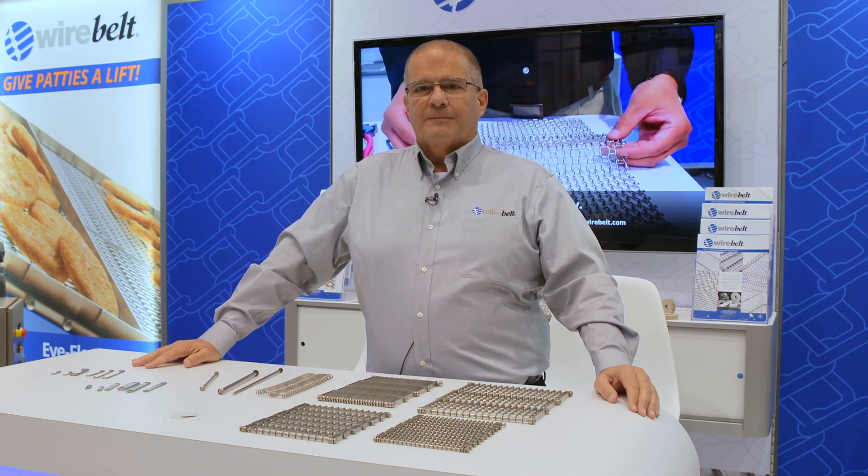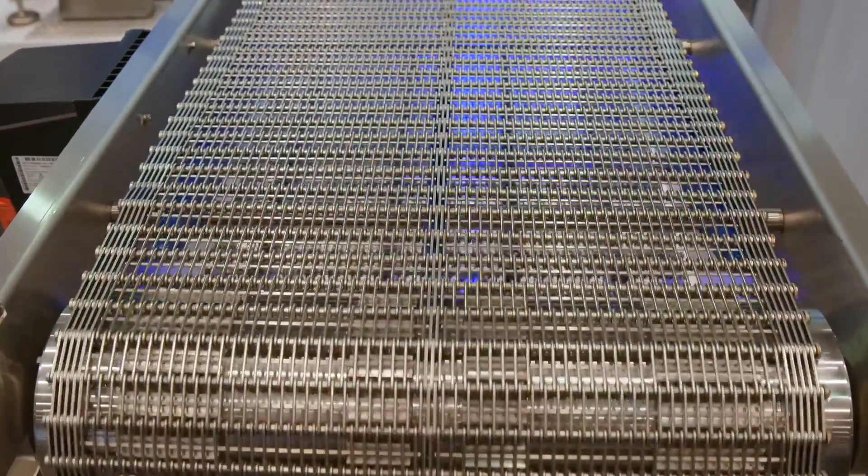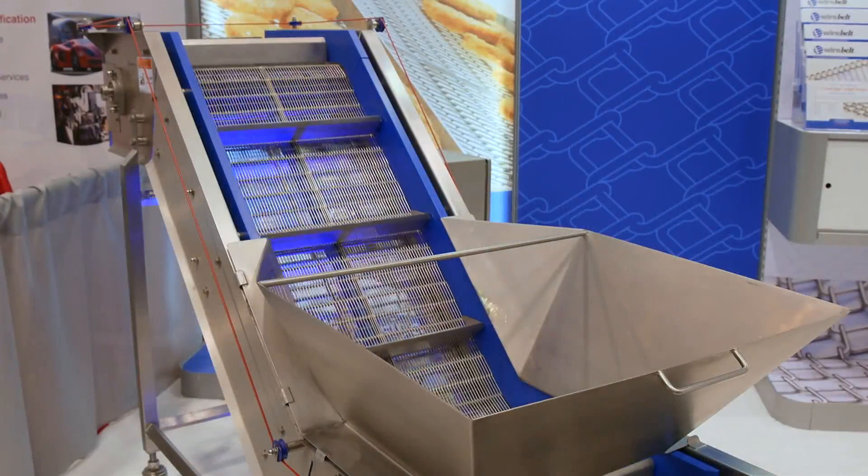The iFlex style of belting is a heavy-duty belt designed for your harsh applications. These applications include baking, cooking, cooling, heating, incline conveyors, and decline conveyors.